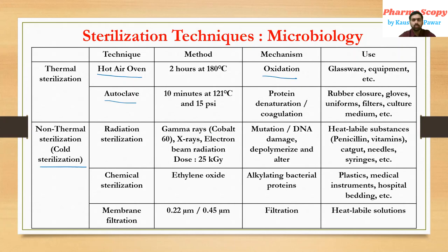To revise: there are two sterilization categories — thermal and non-thermal (cold). In thermal sterilization, the hot air oven acts at 180 degrees Celsius for two hours by oxidation, used for glassware and equipment. Autoclave is used at 121 degrees Celsius for 10 minutes at 15 psi, acting by protein denaturation or coagulation, used for rubber closures, gloves, uniforms, filters, and culture media.